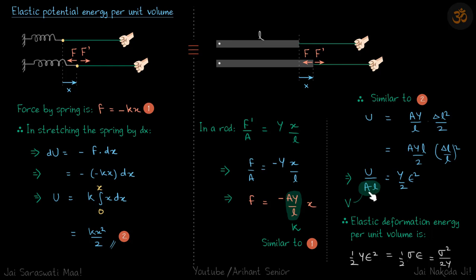So U by AL, and what is AL? Cross-sectional area A into L is the total volume of this rod. So what we got is the total energy stored per unit volume, and that comes to be Y by 2 into strain squared.